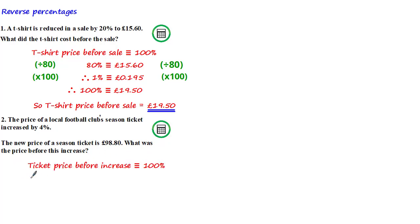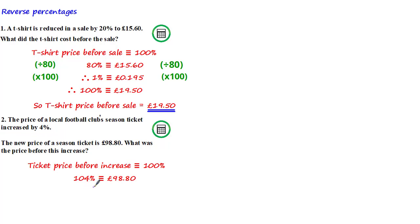So let's say that the ticket price before the increase was equivalent to 100%. Given that the new price of the season ticket was £98.80 after it was increased by 4%, we can say that 104% is equivalent to £98.80. We get the 104% by adding 4% to 100%, since the price increased by 4%.